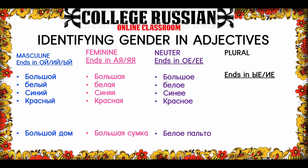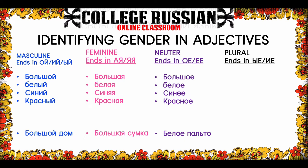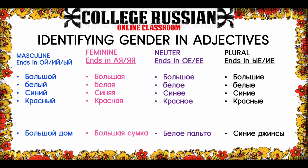Next, plurals have an ие ending. A quick note: sometimes you'll see ие on the end of a word that's a noun — for example, задание, занятие, and things like that. As you learn Russian, you'll be able to better tell what's an adjective and what's a noun. So just a little warning there. Большие, белые, синие, красные. В контексте — синие джинсы.